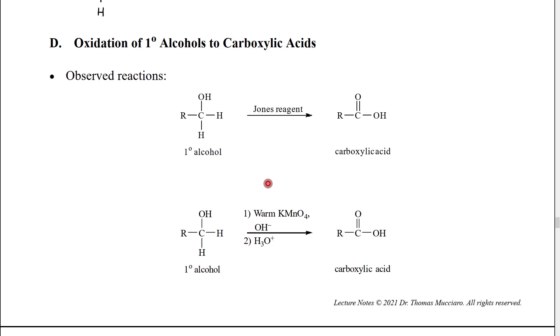However we can also use a reagent that you may have seen in general chemistry potassium permanganate. Potassium permanganate will oxidize primary alcohols up to carboxylic acids. In order to do this what we actually use is room temperature aqueous permanganate although it's generally not written that way we usually just say warm and we have to put in hydroxide ions so typically potassium hydroxide.